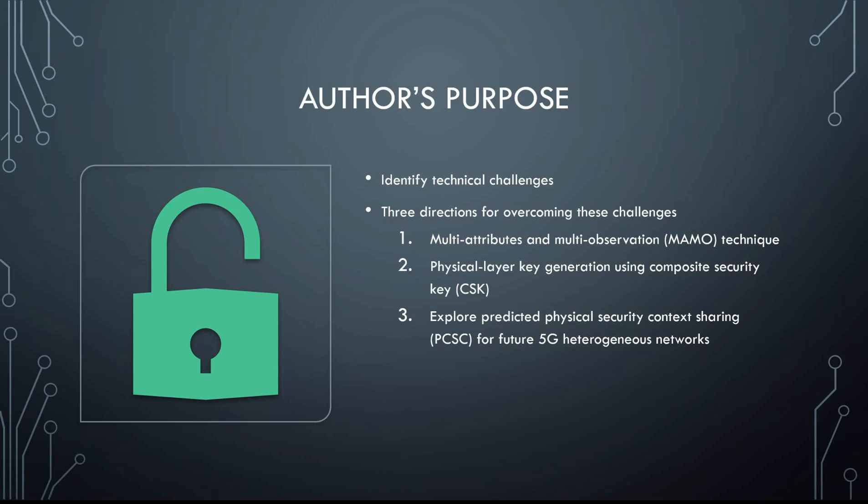The purpose of the paper, generally, was to identify the technical challenges of physical layer authentication. They took three directions for overcoming these challenges: the first was a multi-attribute and multi-observation technique; the second was physical layer key generation using a composite security key — a composite key between the physical layer and the upper layers; and the third was to explore predicted physical security context sharing for future 5G heterogeneous networks.